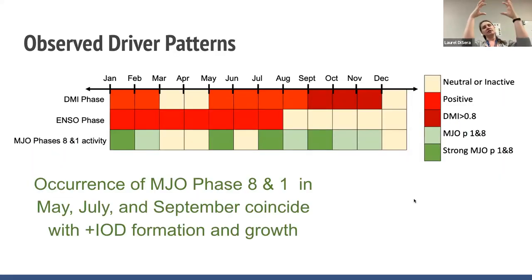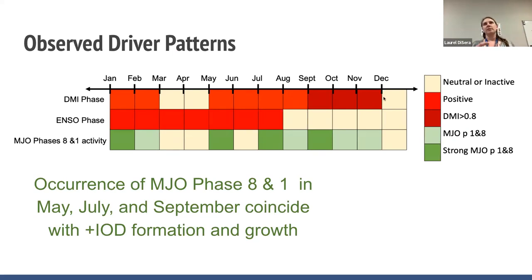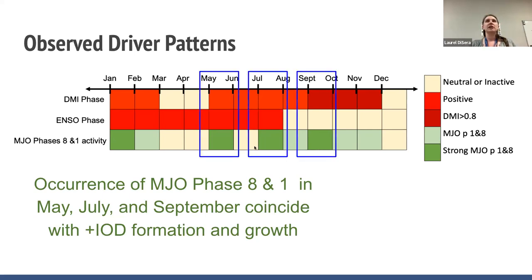Once we get to October, which is when we're really in the strong event, we see the MJO moving backwards into phase eight and then coming back into phase one. There's some very strong relationship between the IOD when it's in a strong positive phase and how the MJO behaves. We decided to think about how these months align. The positive ENSO/positive IOD phase usually tracks together. The positive ENSO El Niño ended in July, but the strongest IOD period was between September and the beginning of December. We focused on May, July, and September for the rest of the analysis.